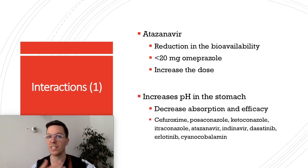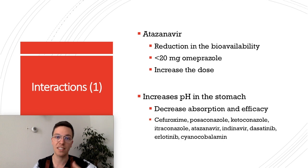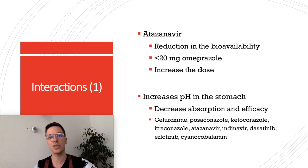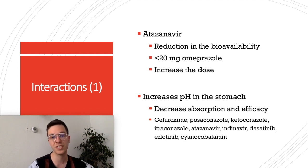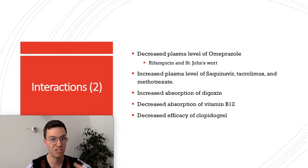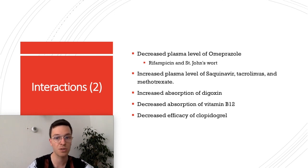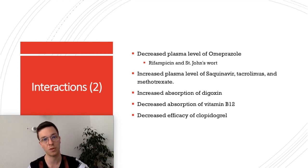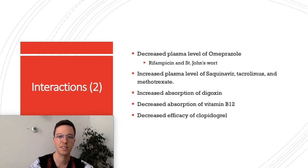The use of Omeprazole can have interactions with other medications. When combined with atazanavir, it can reduce drug availability; it is advised to use a maximum of 20 mg of Omeprazole and increase the atazanavir dose if possible. Omeprazole increases stomach pH, which decreases the efficiency and absorption of several other medications. It can decrease plasma levels of some drugs including St. John's Wort, and increase plasma levels of others including methotrexate. It increases absorption of digoxin but decreases absorption of vitamin B12. It can also decrease the efficacy of clopidogrel.